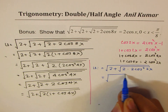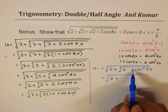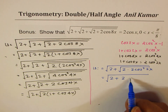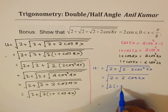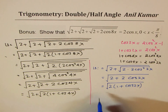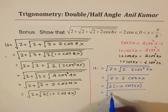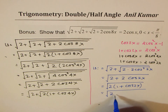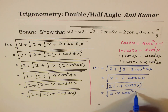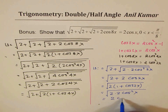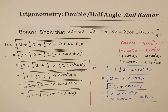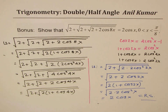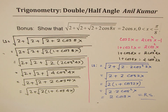Applying the formula one more time: 1 plus cos 2x equals 2 cos squared x, so square root of 2 plus 2 cos 2x becomes square root of 2 times 2 cos squared x, which equals square root of 4 cos squared x, giving 2 cos x, which is exactly the right side. That proves the identity by applying the double angle formula for cosine three times.